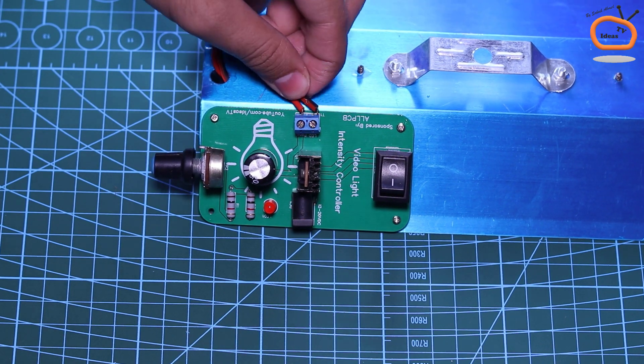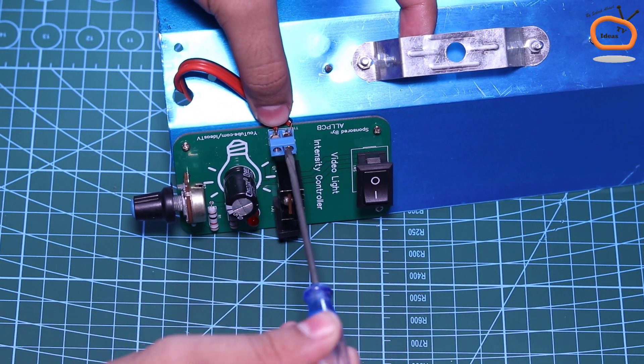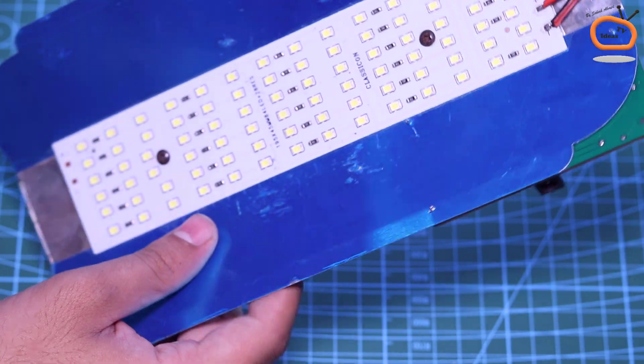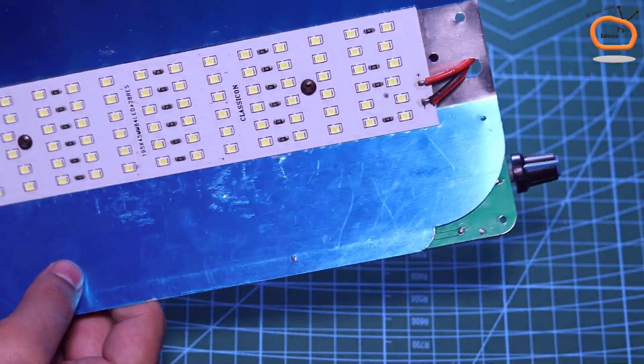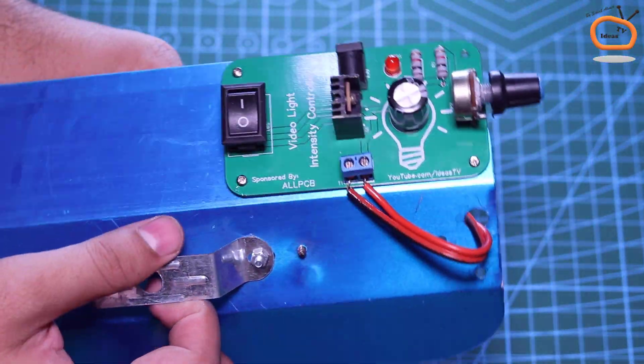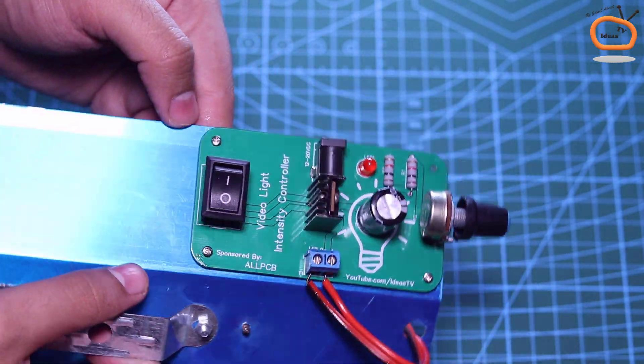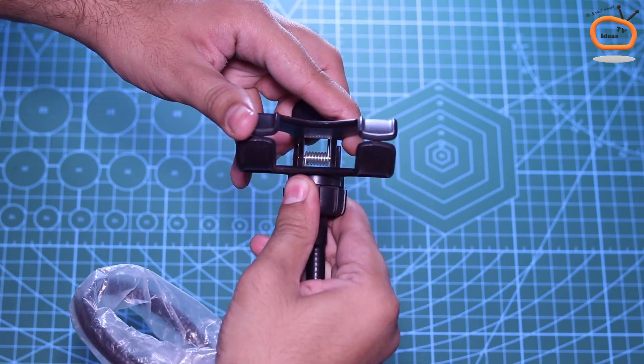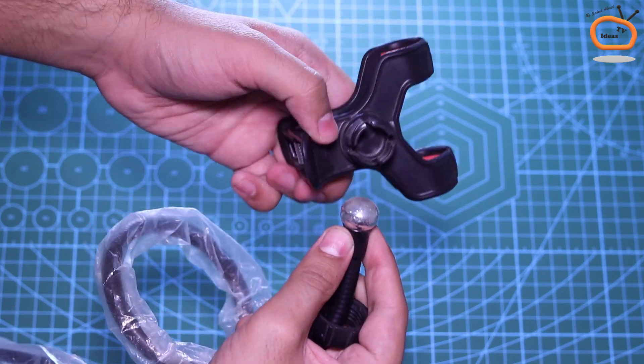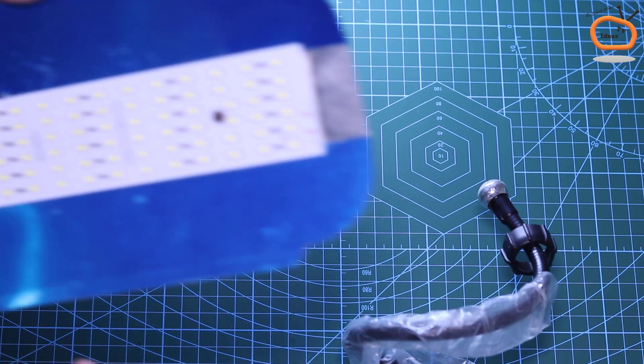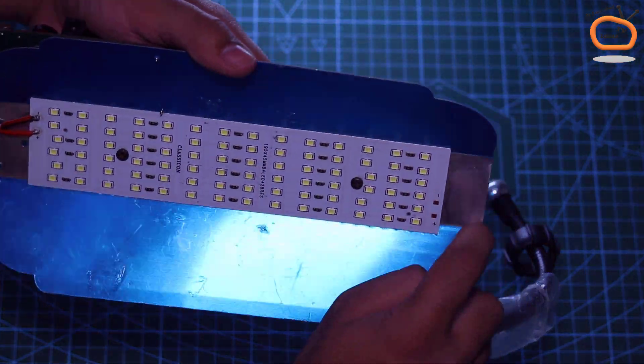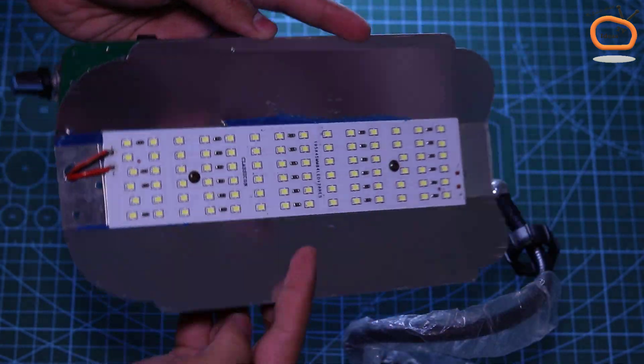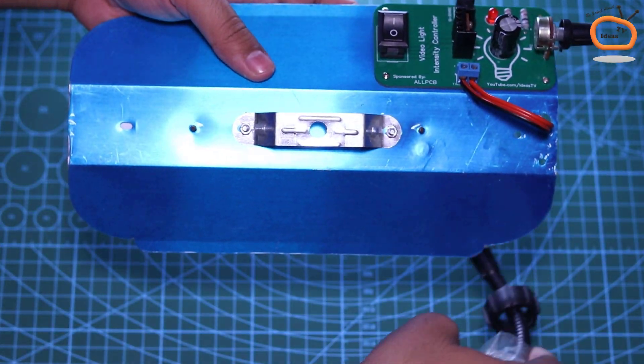Meanwhile, I am connecting the wires from the LED panel to the controller board by using screw terminal block. Remove the mobile holder clip from the snake tripod. Peel off the wrapper from the LED shade and connect the snake tripod to the LED panel as shown.